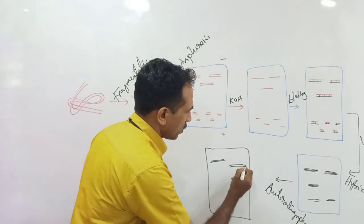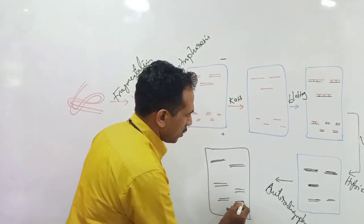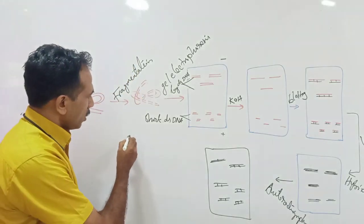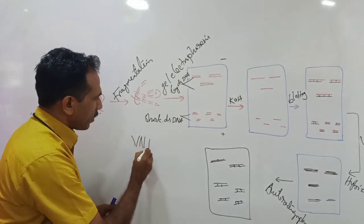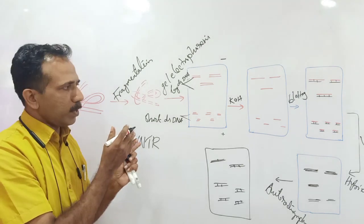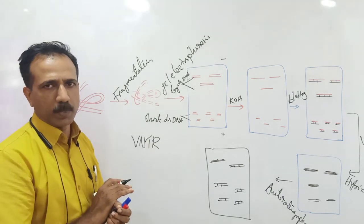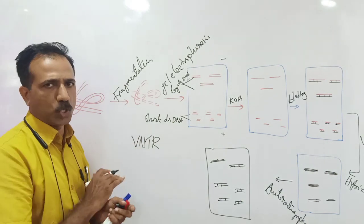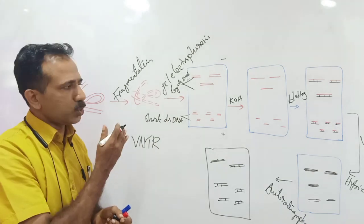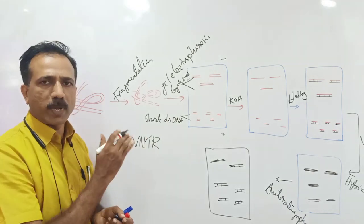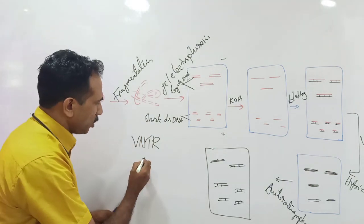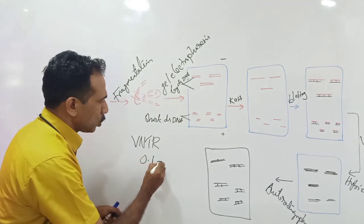VNTR means Variable Number of Tandem Repeats — it is a mini satellite where sequences are tandemly arranged in many copy numbers. Tandem means multiple copies of the same sequence. The number of copies varies from chromosome to chromosome, so VNTR shows a high degree of polymorphism among individuals. The size of VNTR varies from person to person, ranging from 0.1 to 20 kilobase pairs.